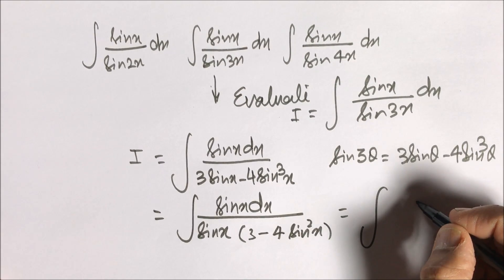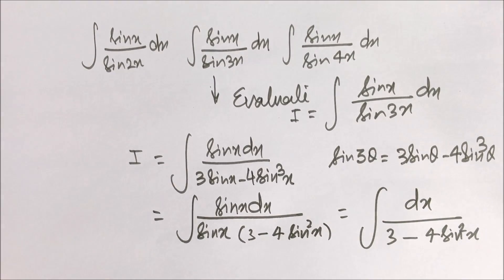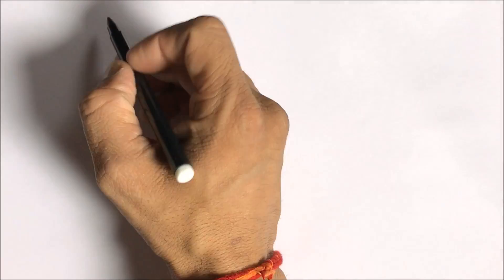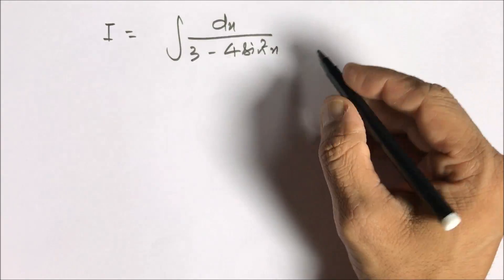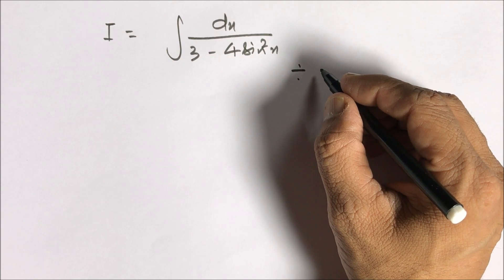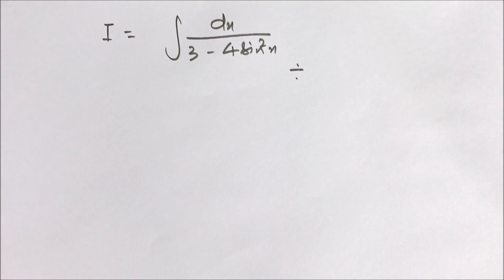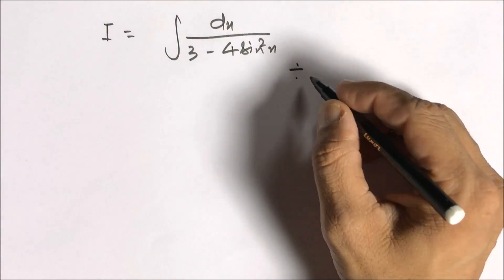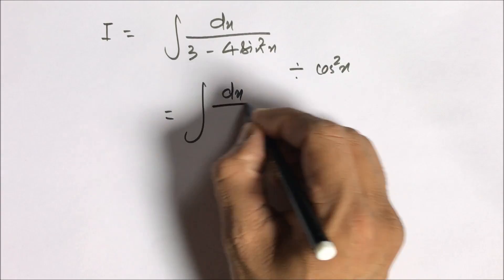After cancellation, we get the integral of dx over (3 − 4sin²(x)), which is a very simple form. We divide numerator and denominator by cos²(x). Dividing by cos²(x) gives us sec²(x) dx in the numerator.